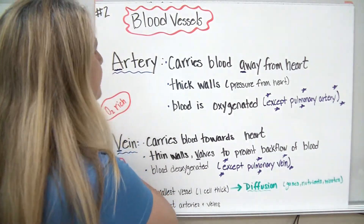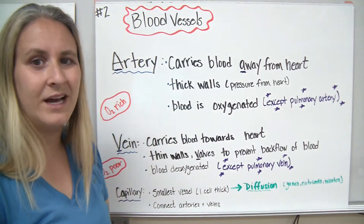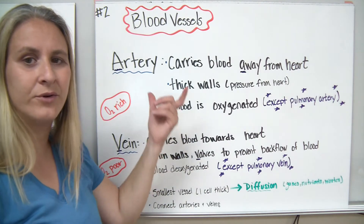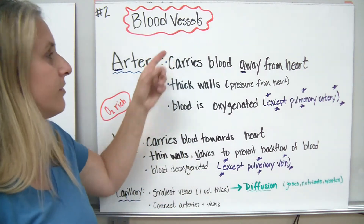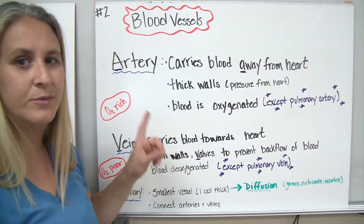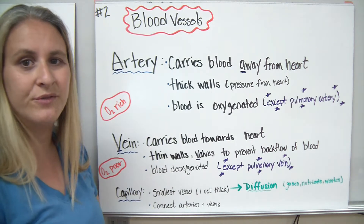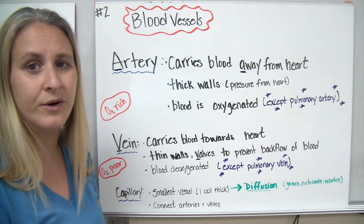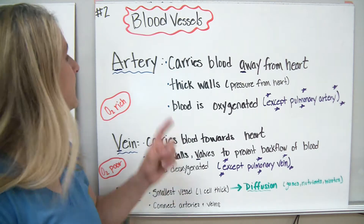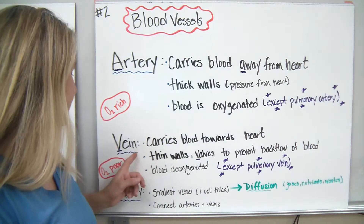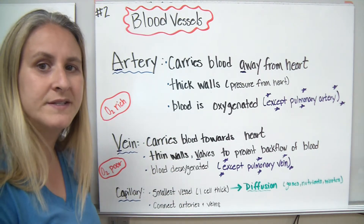Now we know how the clot is formed, and we know there are structures inside our body to transport materials. These are called blood vessels, and we have three main kinds — which you've probably heard of, but may not know their jobs. They are arteries, veins, and capillaries.